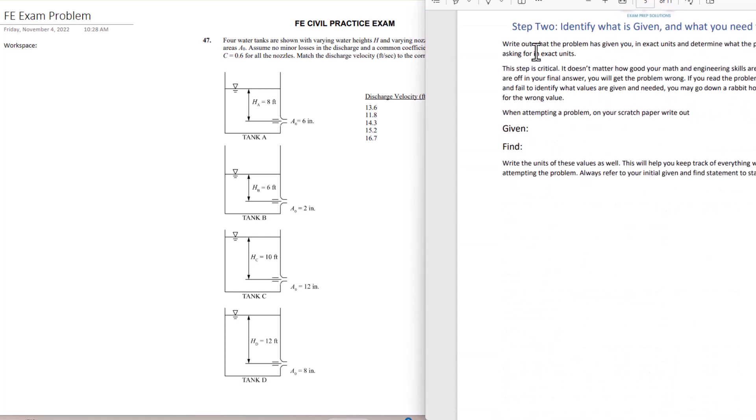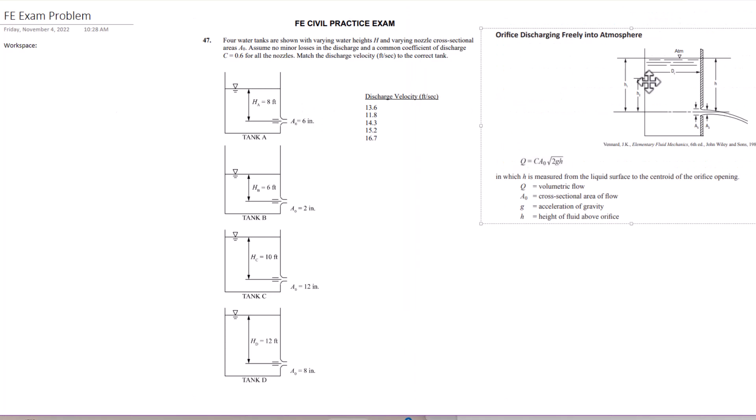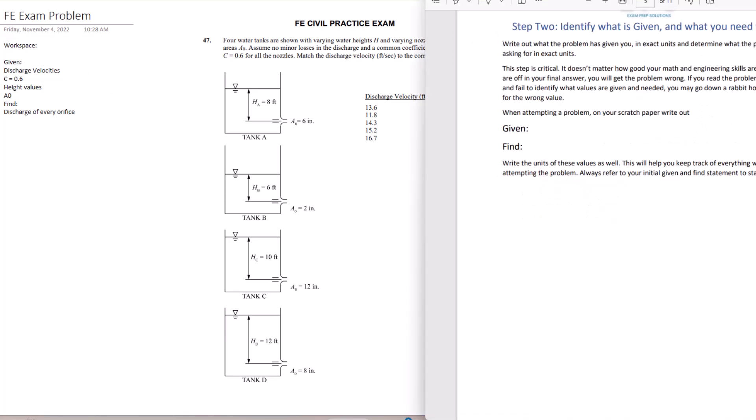Now we're going to step two: identify what is given and find what you need. I do have the FE manual excerpt here that I'm going to use, assuming that I went and found this in the manual looking at discharge and minor losses. This is what I'm going to want to reference. So next in the guide it says identify what is given and what you need to find. Given would include all these discharge velocities, right? There's five of them we got to match up. We also found that C equals 0.6 for everything, and then we were given these different height values and A naught. These are all the values that we were given for the problem here. What do we need to find? We need to find the discharge of every orifice and then we need to match them up.